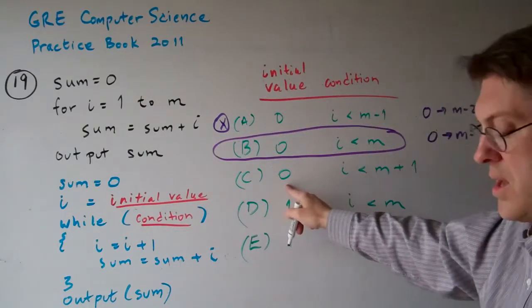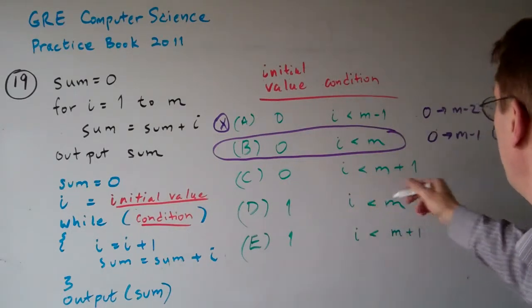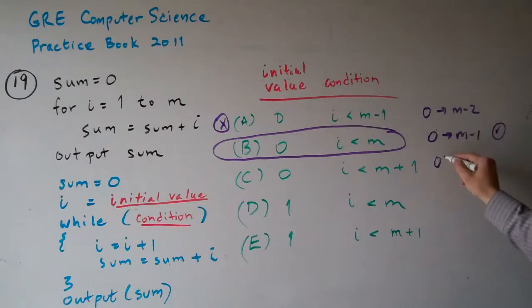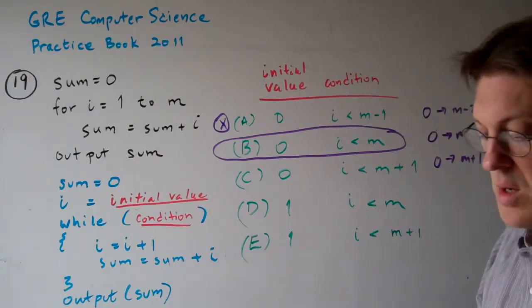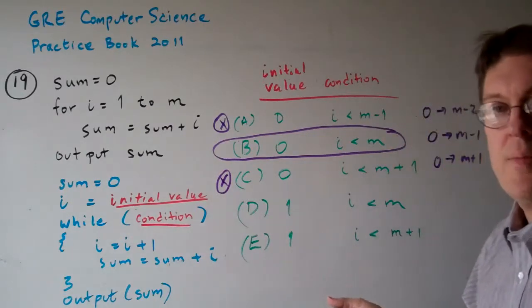But let's check out the other ones. If we go to 0 to m plus 1, that's m plus 1 iterations. It's the wrong number of iterations, so this can't be right. We can only iterate m times.